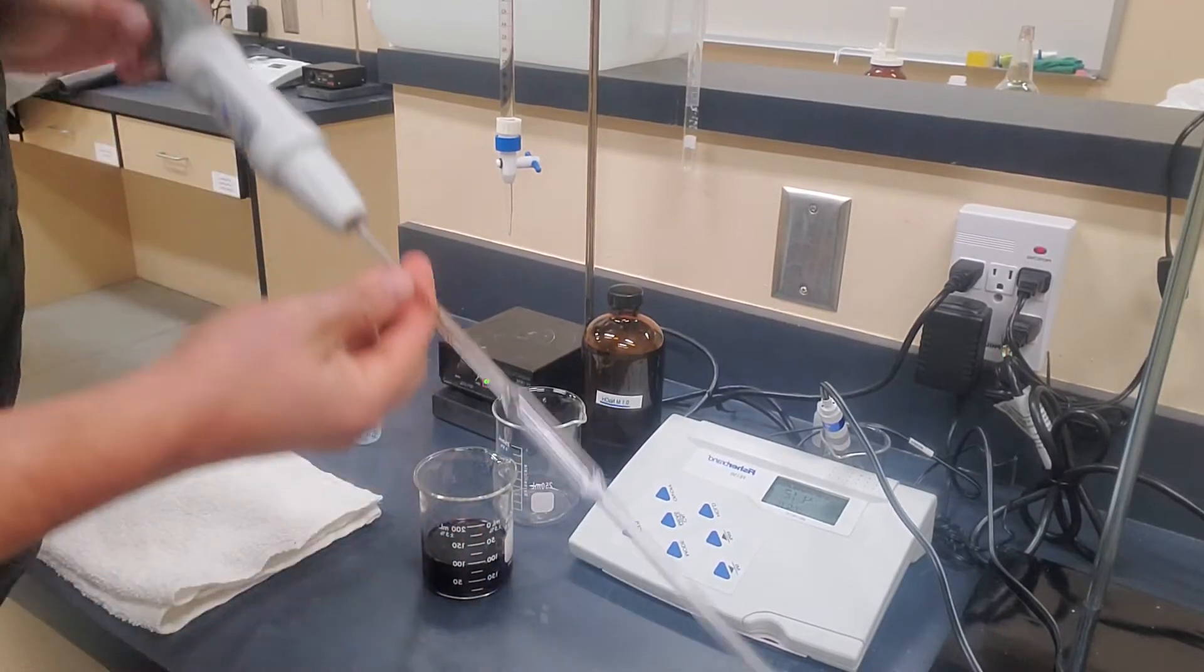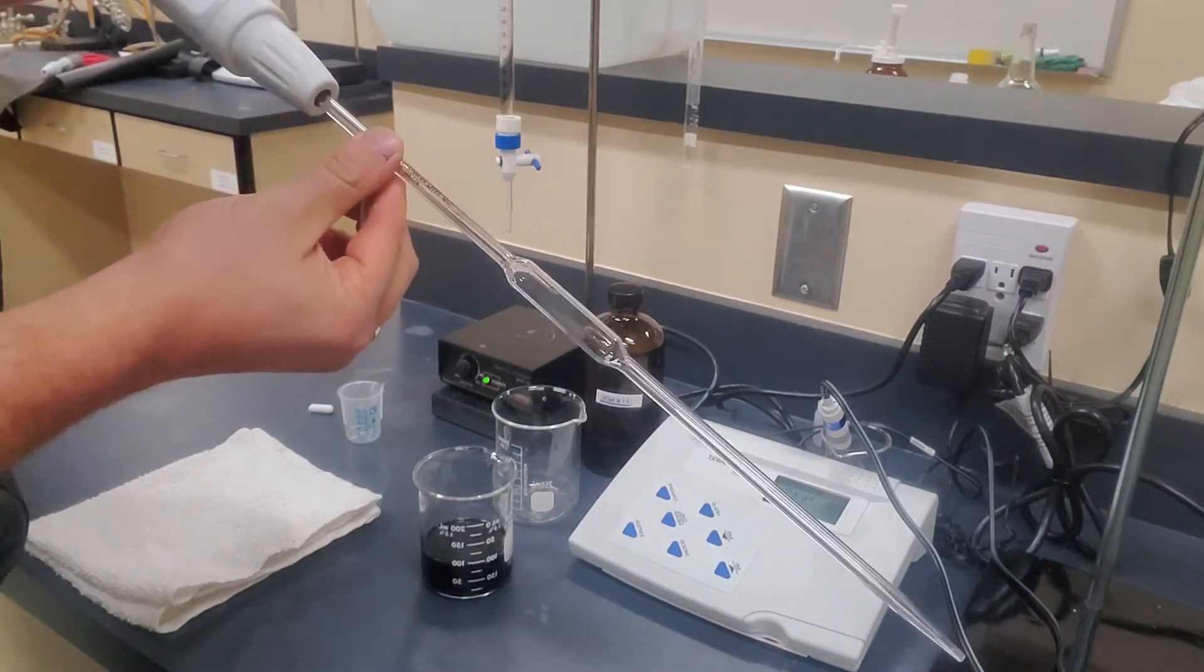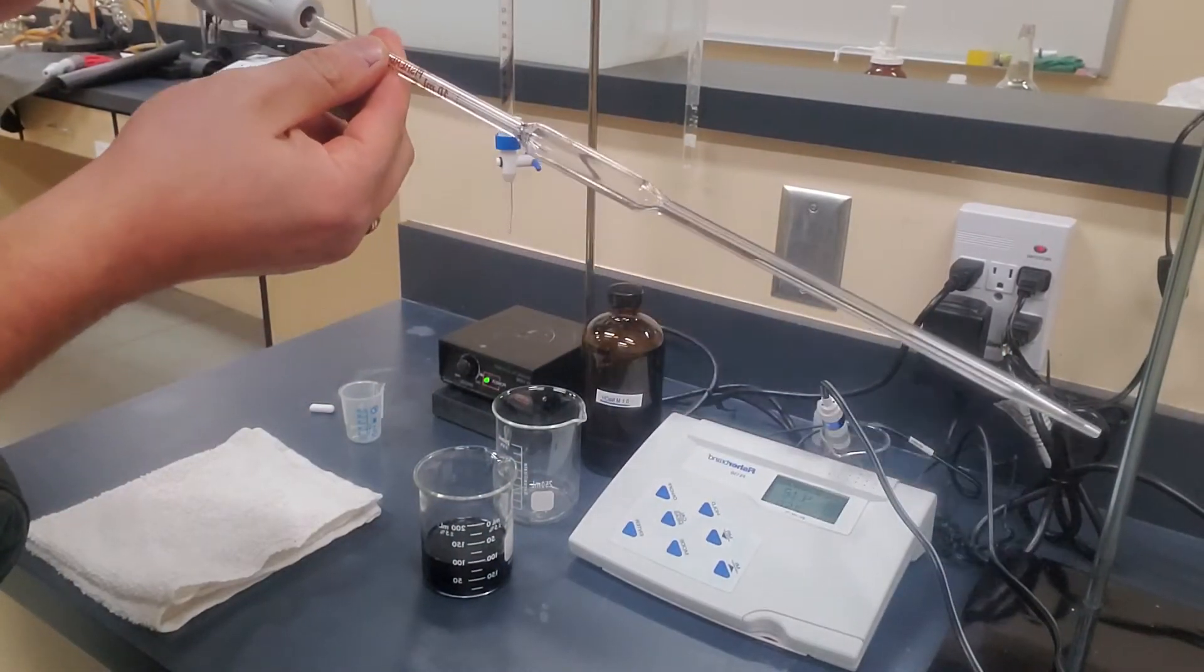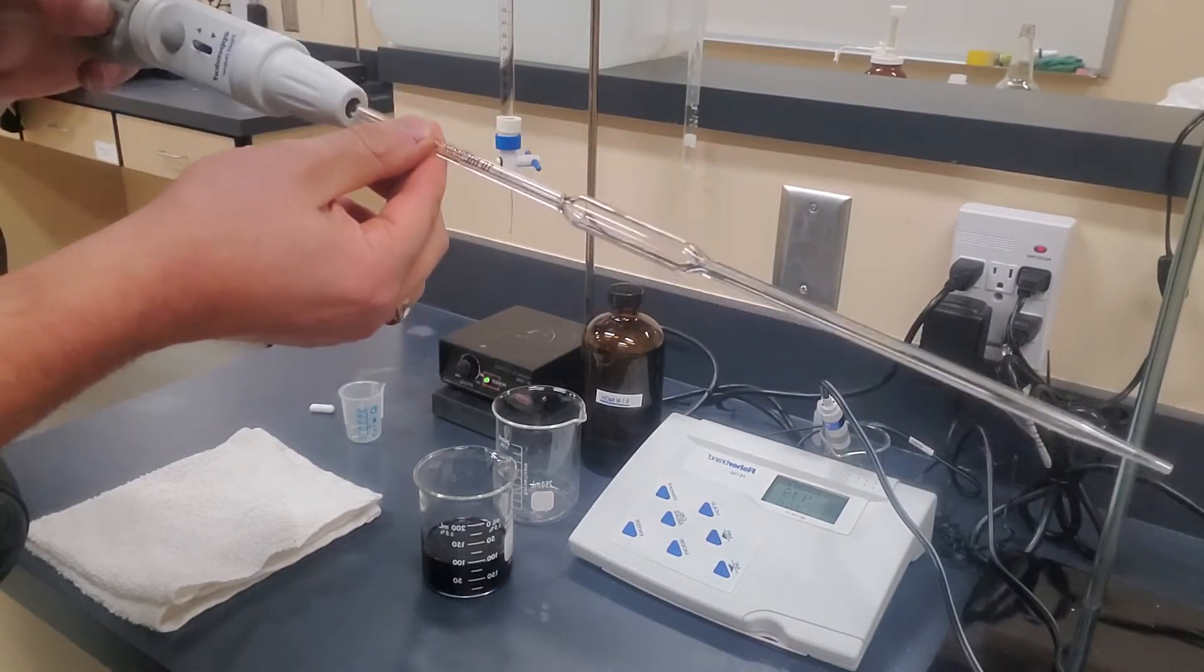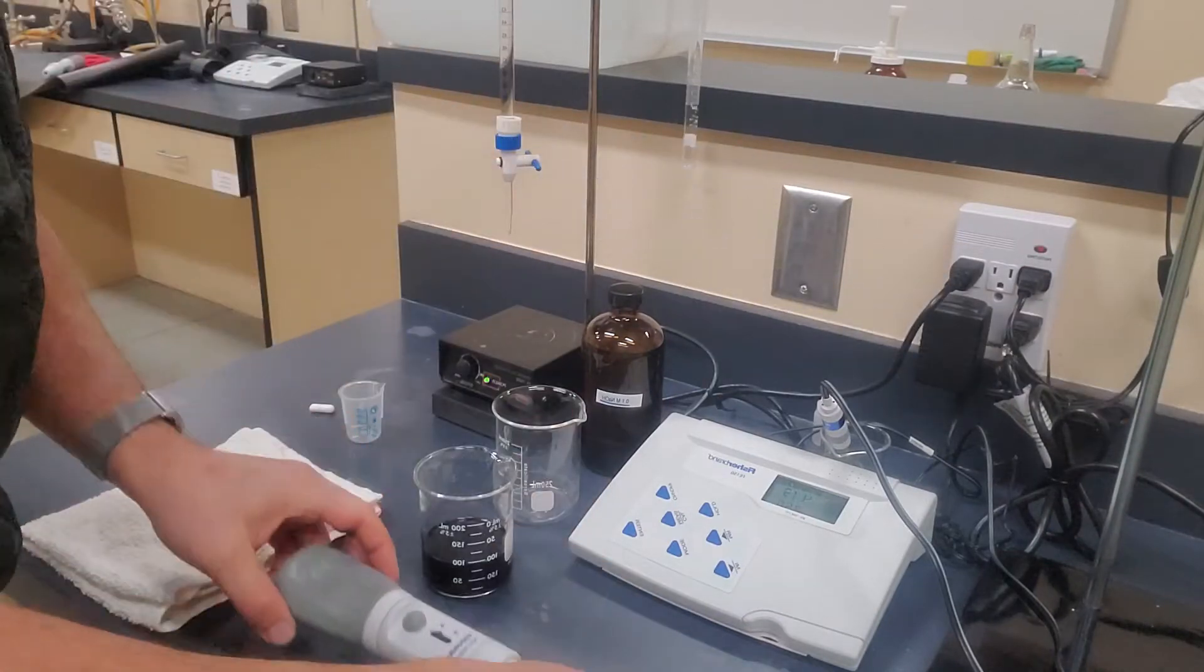The things that you're going to need are a 10 milliliter volumetric pipette, so high quality. You have to have a very accurate measurement of your 10 milliliters of wine.